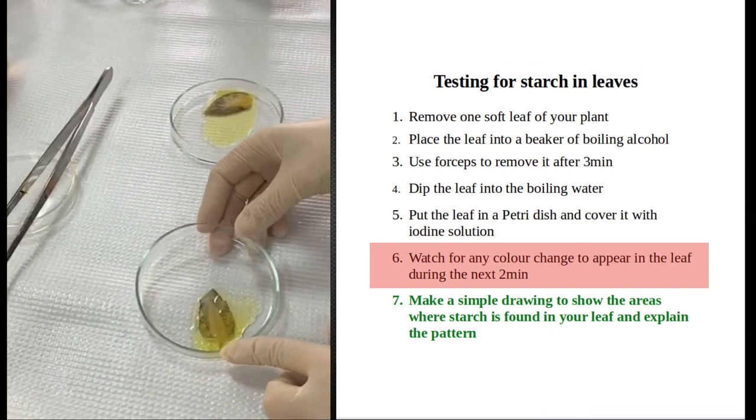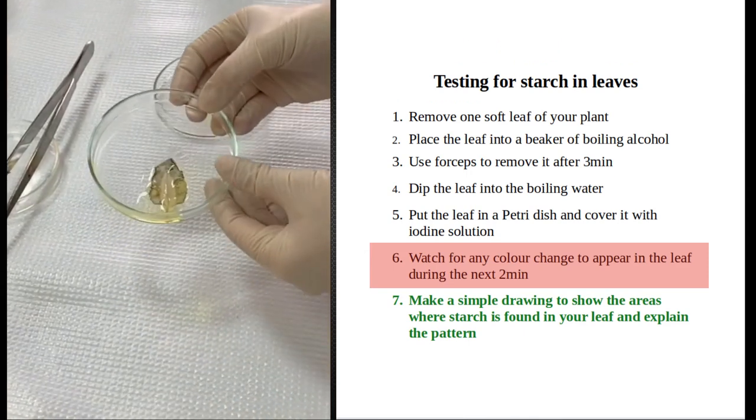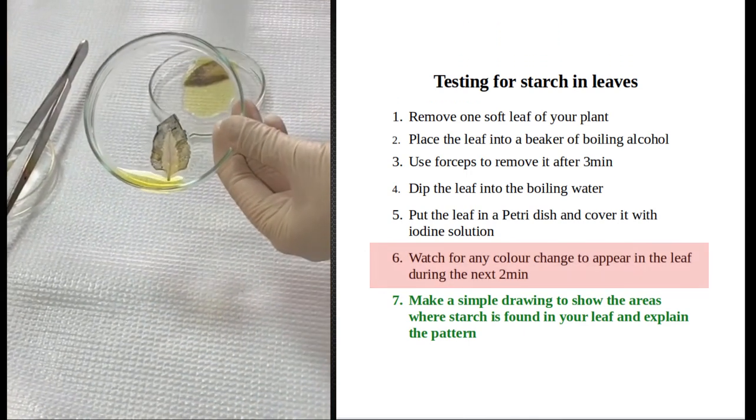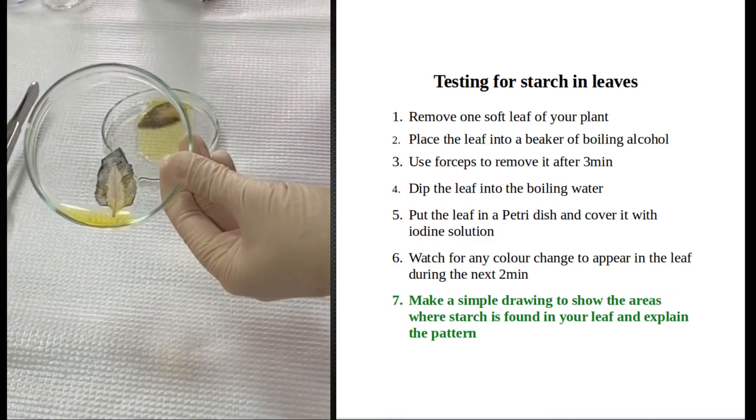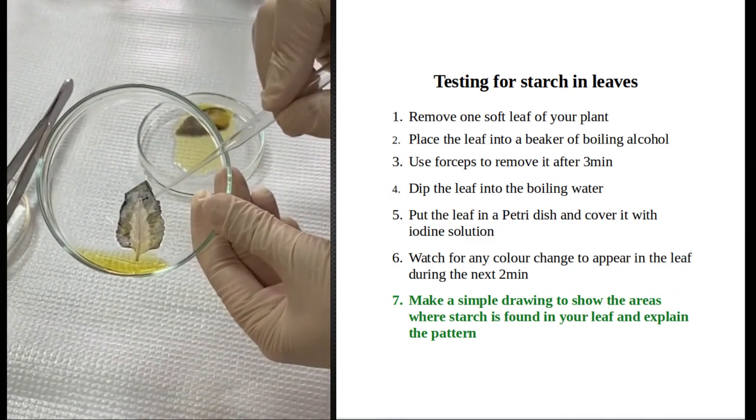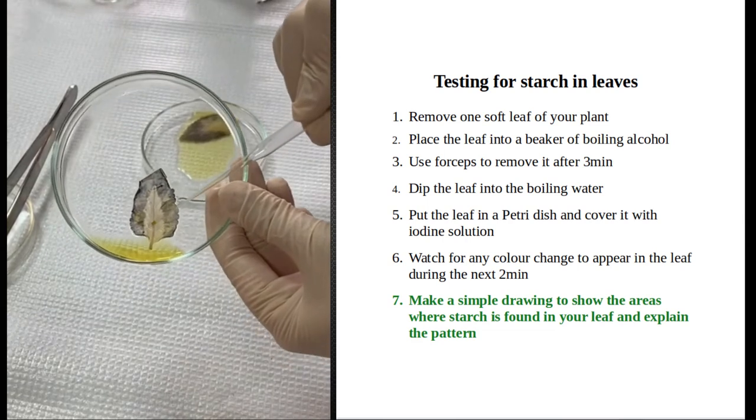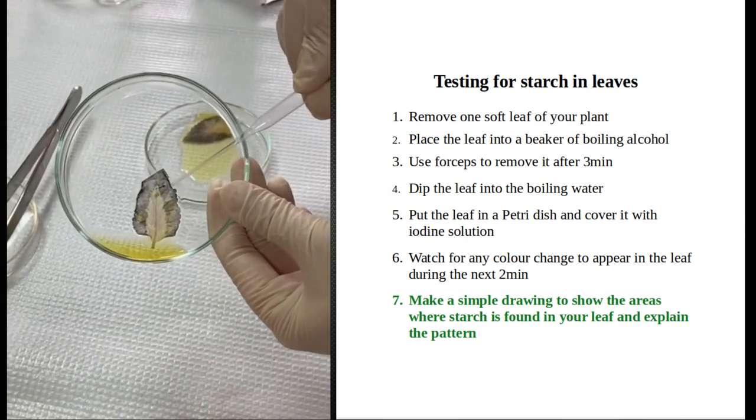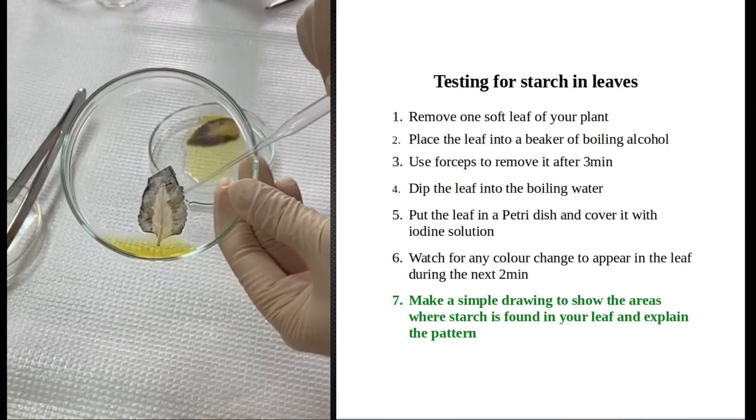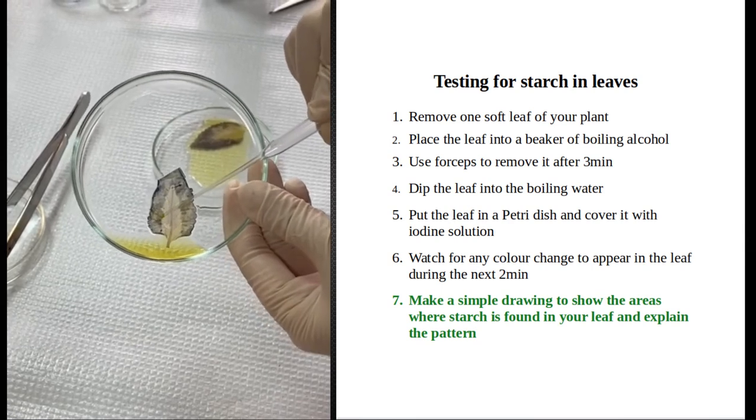The results of this leaf start becoming clear. You can see it on the white background now. This is the area that was green, that had chlorophyll, and this is the middle that was white and purple where there was no chlorophyll.